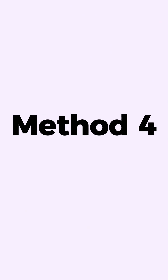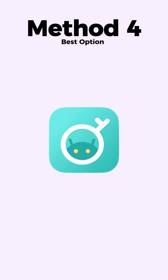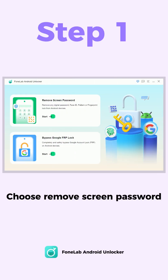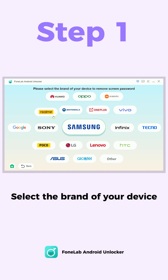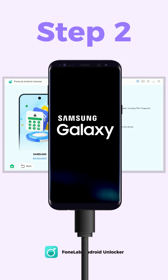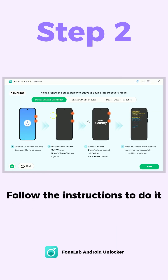The most recommended tool is Phone Lab Android Unlocker. Install the program on your computer and choose Remove Screen Password on the interface, then choose your device from the options. Follow the instructions to enter Android recovery mode.